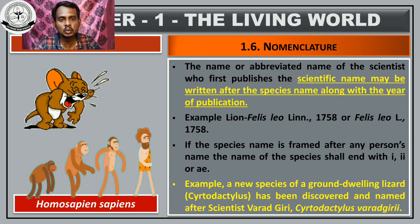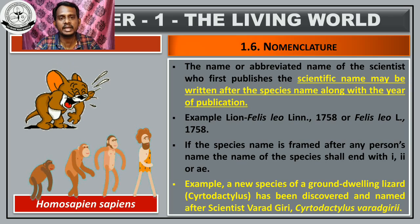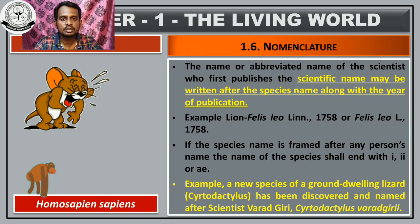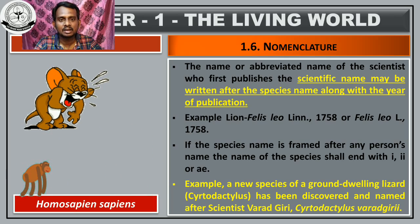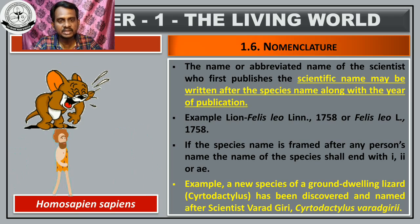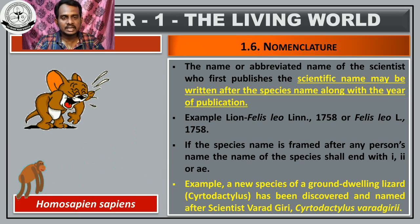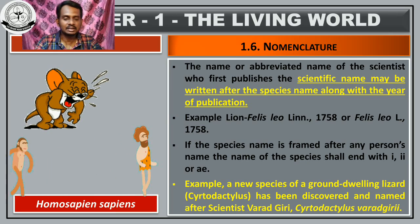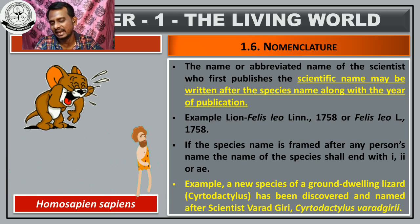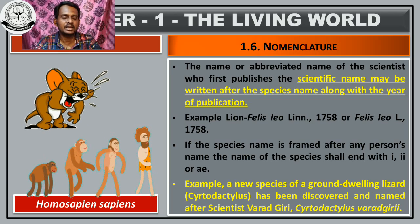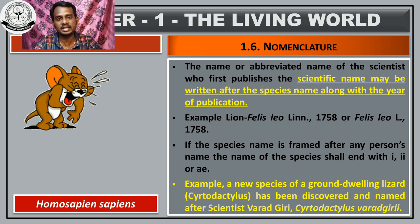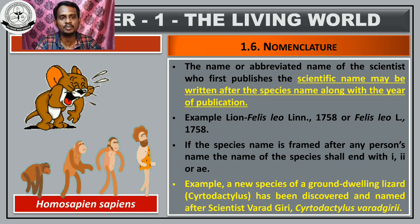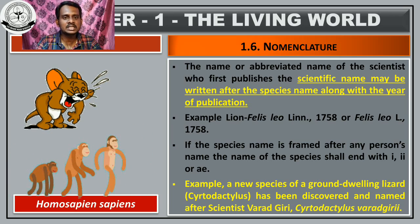These are the various rules followed during assigning the scientific name. This is an important five-mark question — students should be thorough with this part. The various rules of nomenclature are an expected question for the annual exam. So the nomenclature part is over. Next class we will start with another topic in chapter number one — the various tools that help to study animals or plants. That may be the last class for chapter number one. We will meet next class, thank you students.